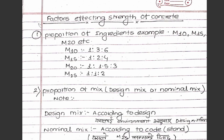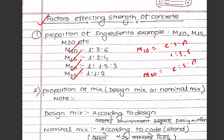Factors affecting the strength of concrete: first, proportion of ingredients. Concrete grades include M10, M15, M20, M25, and M30. M10 has a cement-sand-aggregate ratio of 1:3:6. M20 has a cement-sand-aggregate ratio of 1:1.5:3. The cement-sand-aggregate ratio determines the concrete grade.